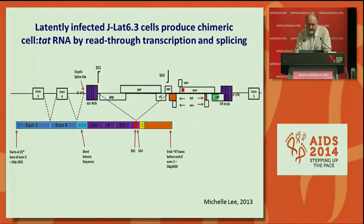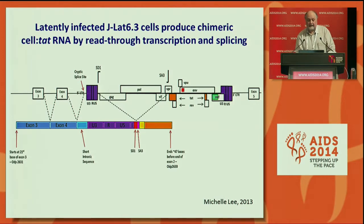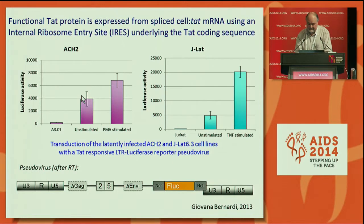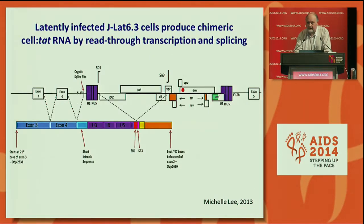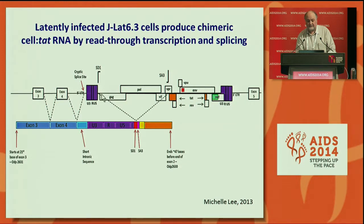We've gone on to look at another cell line, the JLAT 6.3 cells, where we were able to clone and sequence such chimeric messages. We clearly found splicing events taking place between cellular exons and, in this particular case, a cryptic splice site just upstream of the LTR, read-through transcription of the LTR, and then the normal splicing event for HIV transcription between splice donor 1 and splice acceptor 3 to generate this TAT-containing chimeric message.